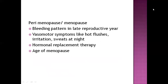For perimenopause and menopause, if the woman is above 45 years, we obtain that history. This includes the bleeding pattern in late reproductive years — whether it is regular or irregular — and any vasomotor symptoms such as hot flushes, irritation, or night sweating. We should also ask whether the patient is undergoing hormonal replacement therapy or has already faced menopause, including the age of menopause.